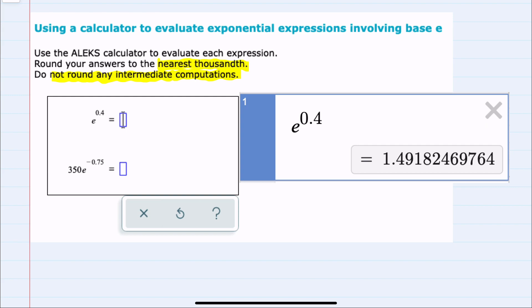For the first example, I input e, the caret symbol to get an exponent, and then 0.4. That gives us our calculation that we now need to round to the thousandth place.